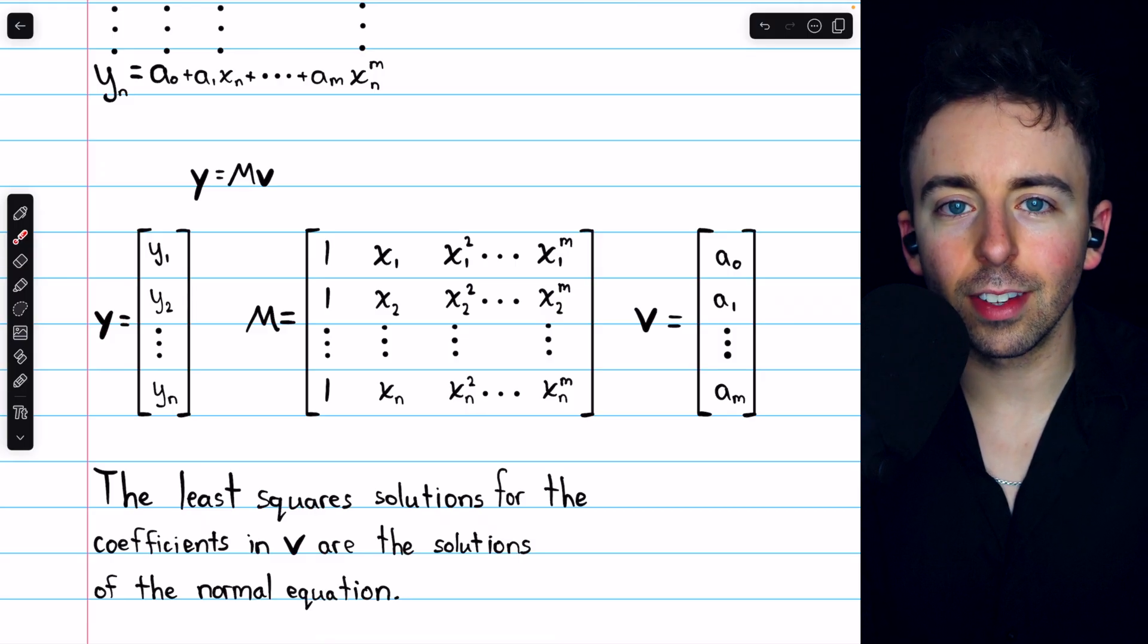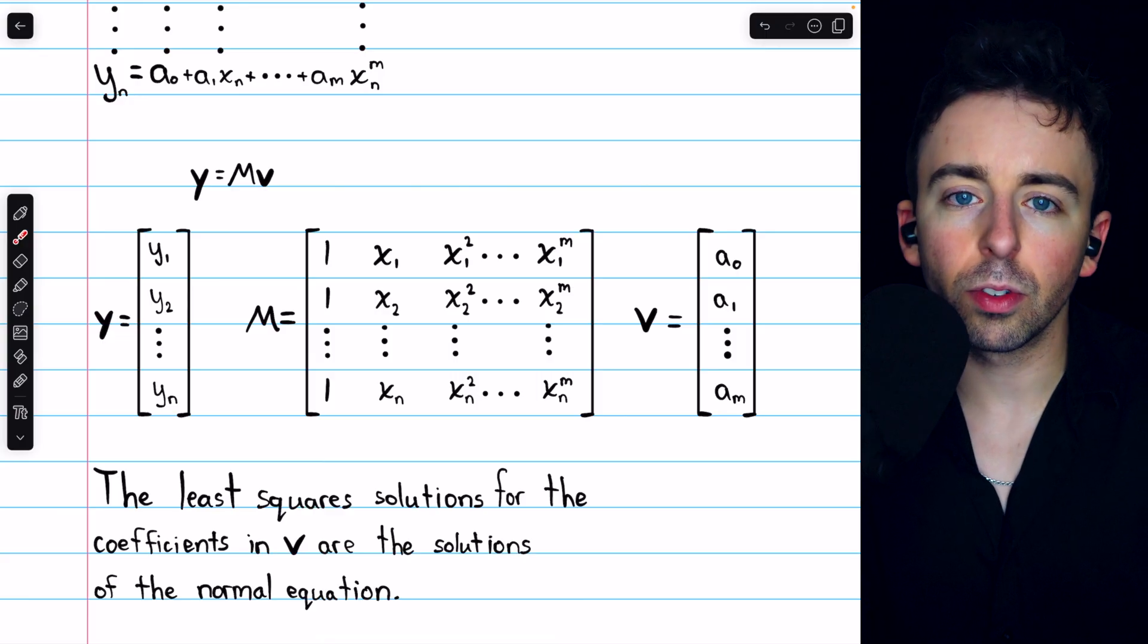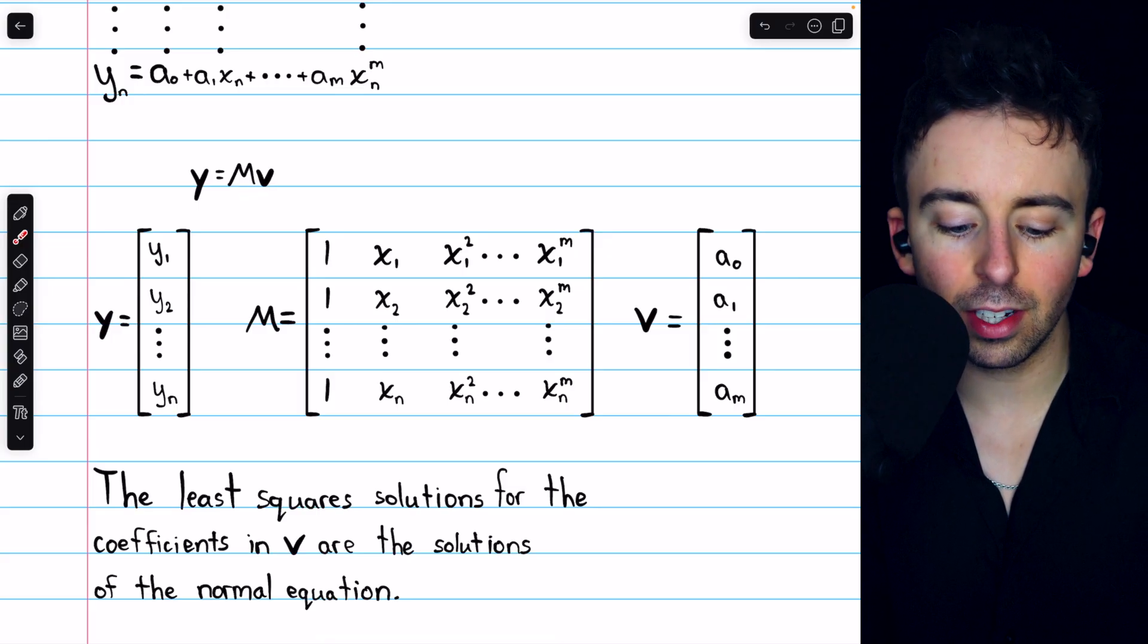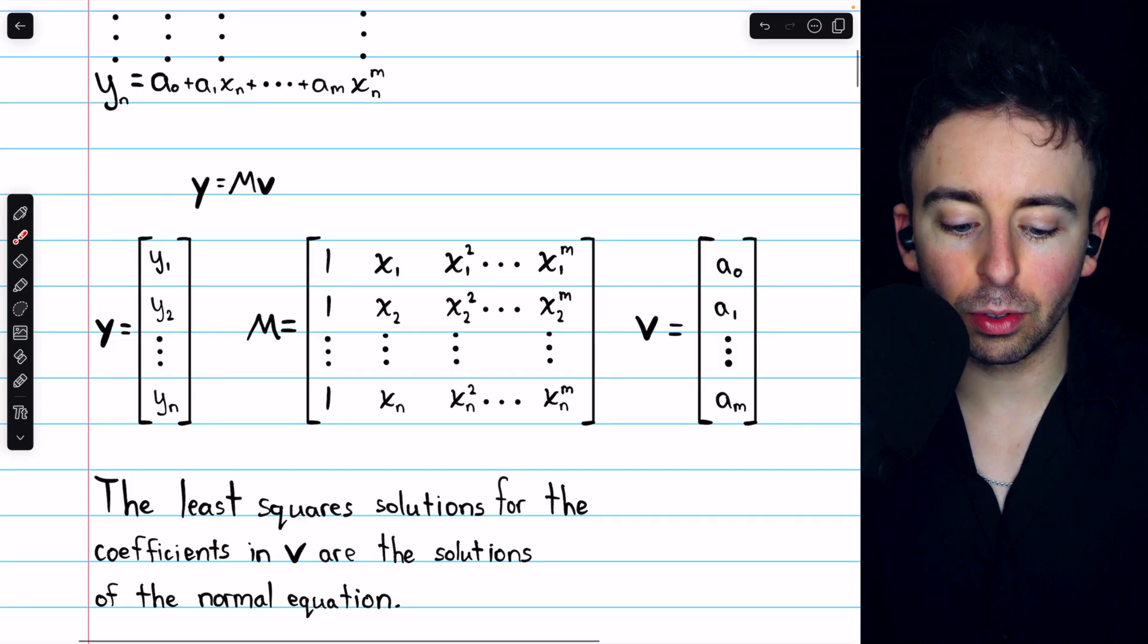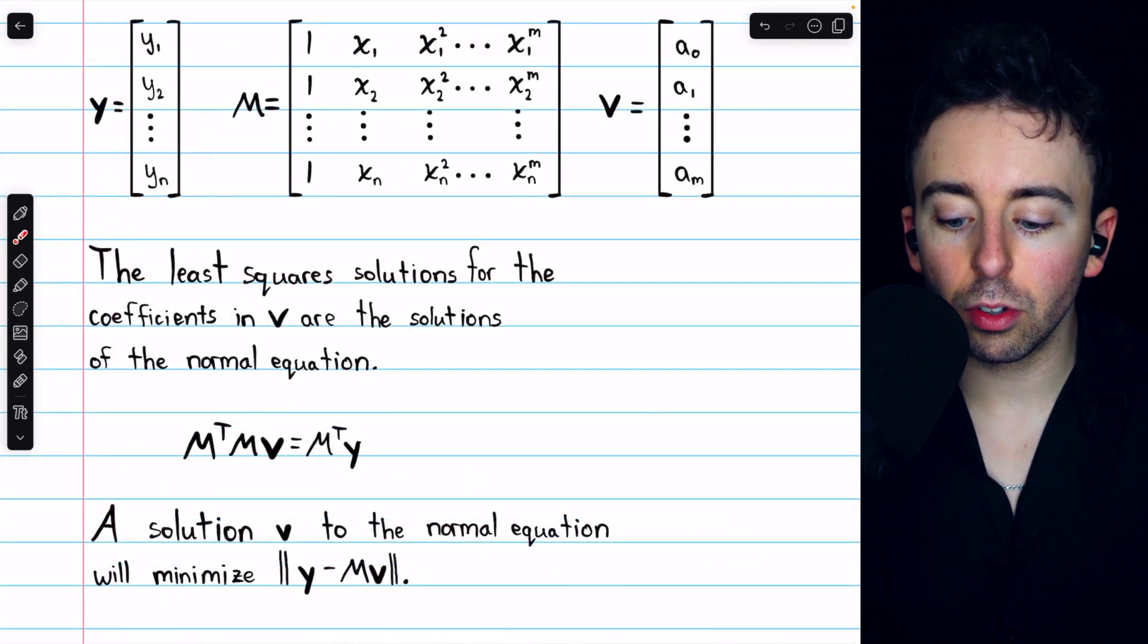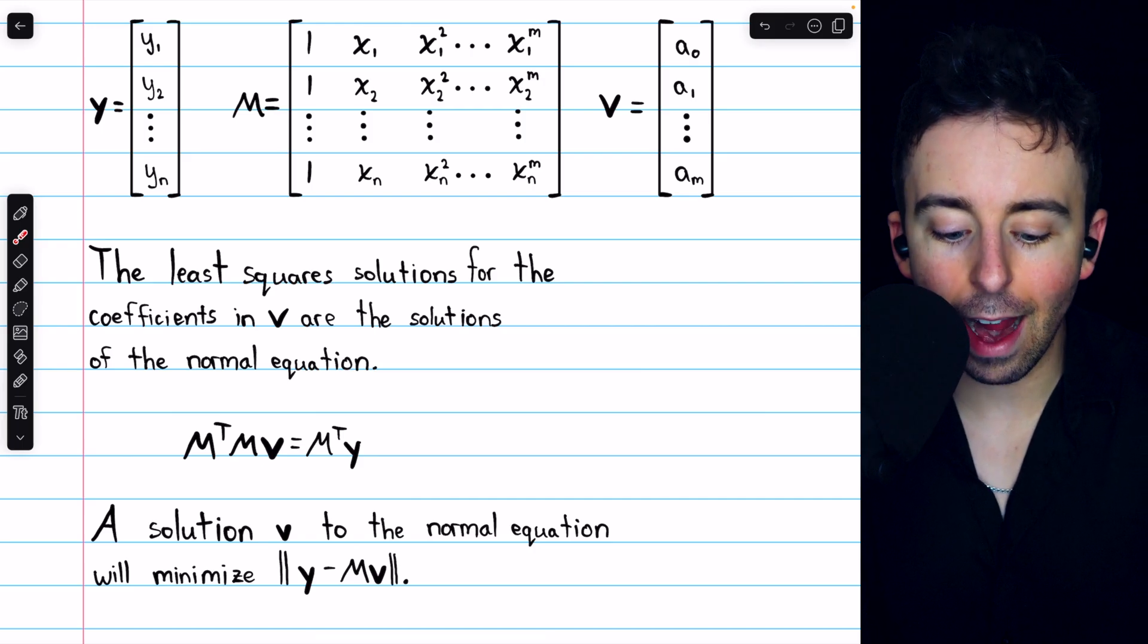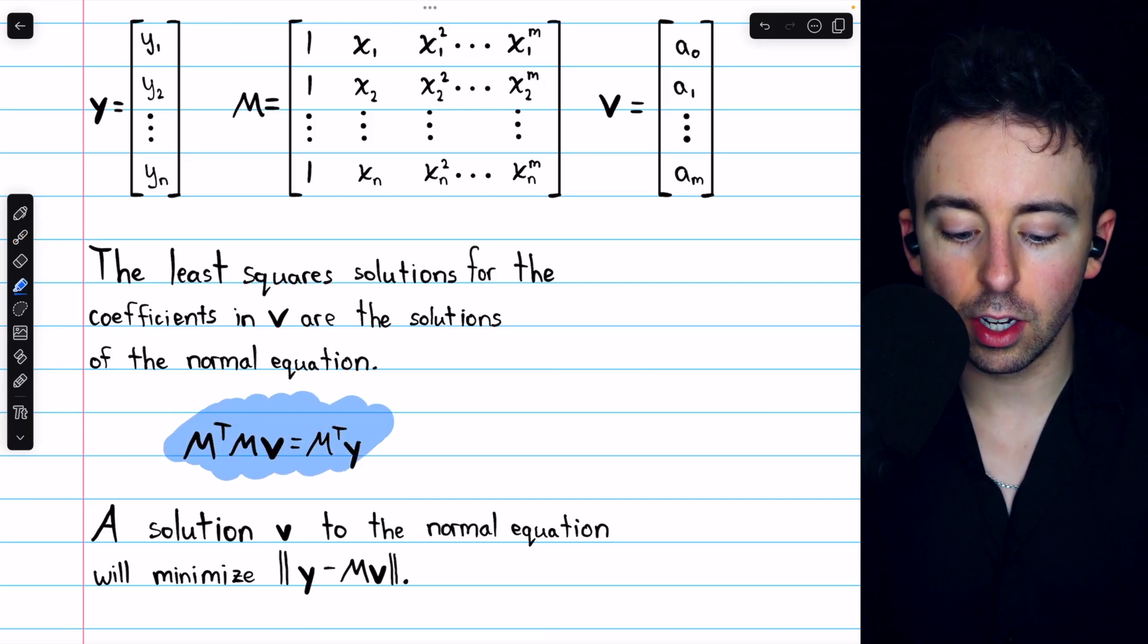So once we find those coefficients, which are in the vector v, it should be that Mv is as close to the vector y as possible. We're getting as close as possible to making all of these equations true. And to find those coefficients of the best fitting polynomial, we simply seek the least square solution, minimizing the error. And for that, as previously, we use the normal equation.